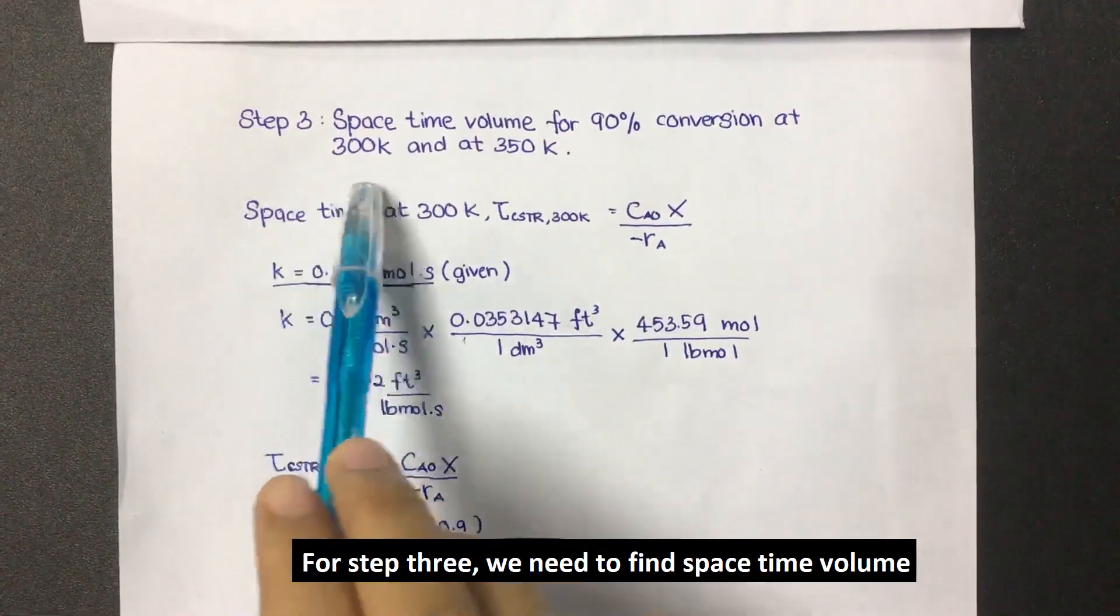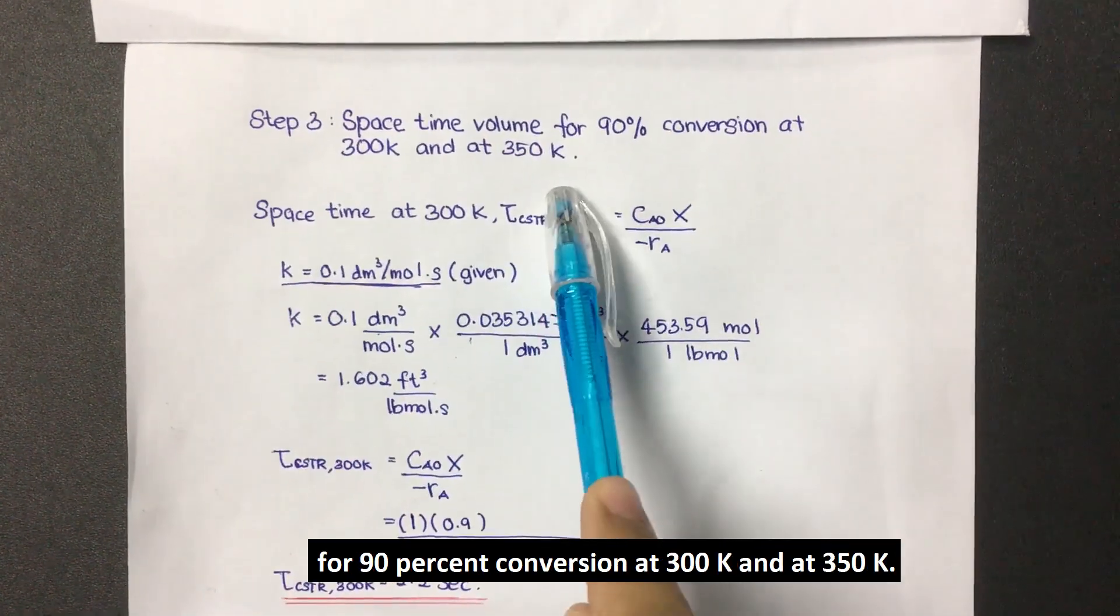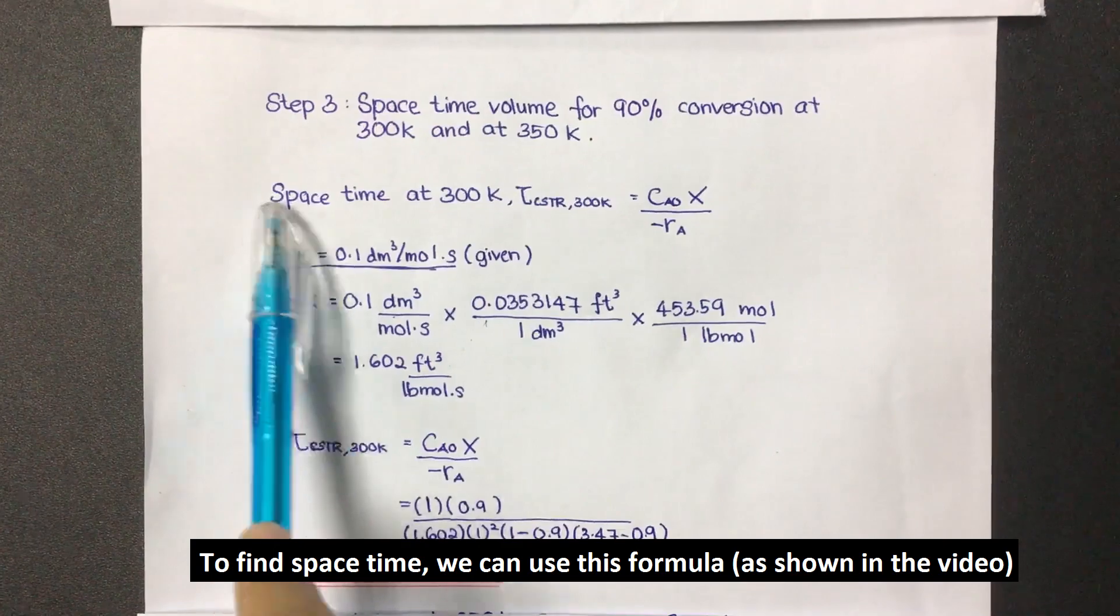For step 3, we need to find space time volume for 90% conversion at 300K and at 350K. To find space time, we can use this formula.